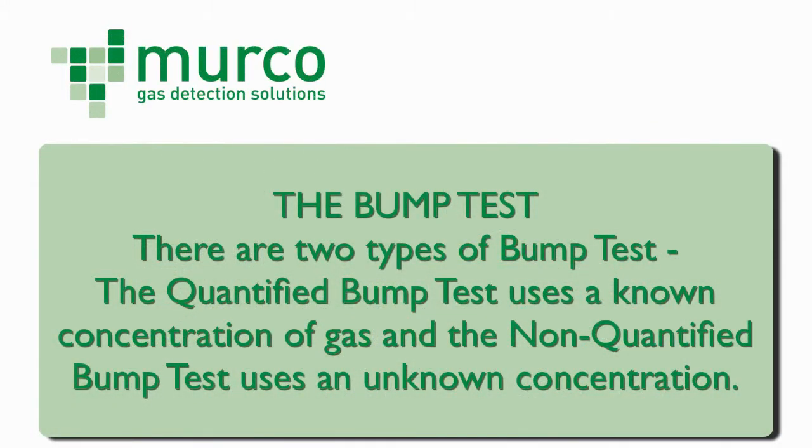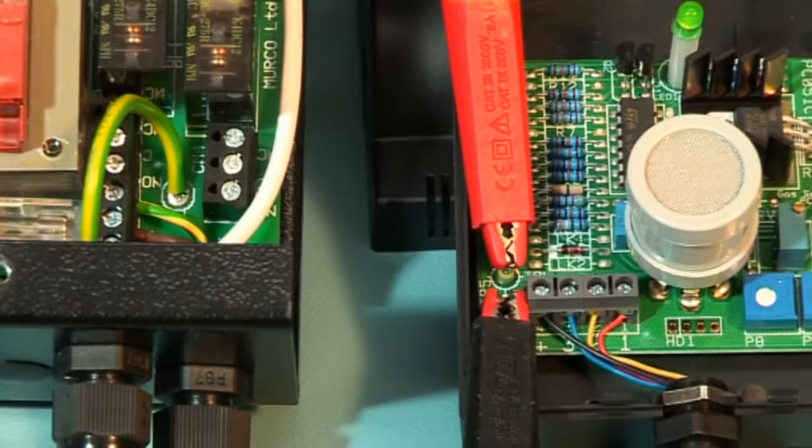There are two types of bump test. The quantified bump test uses a known concentration of gas and the non-quantified bump test uses an unknown concentration. For a two-level system, connect the voltmeter between TP5 and TP4.